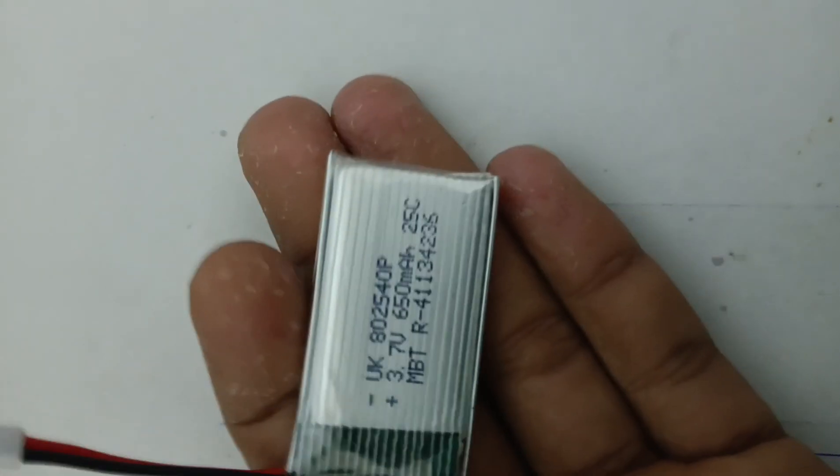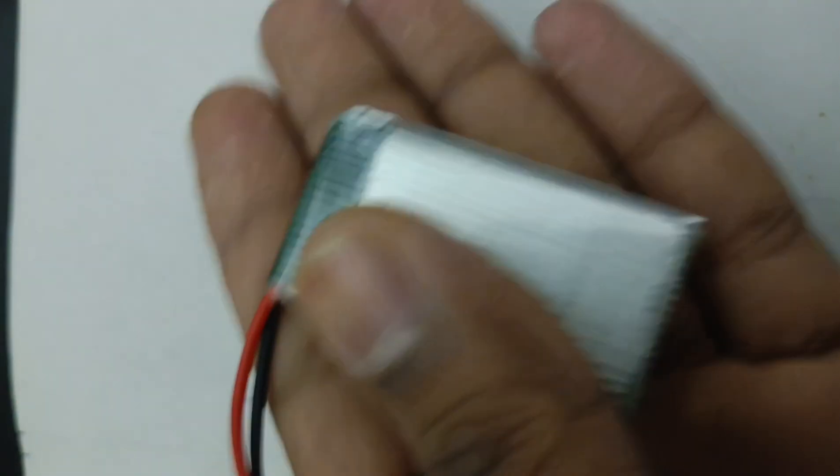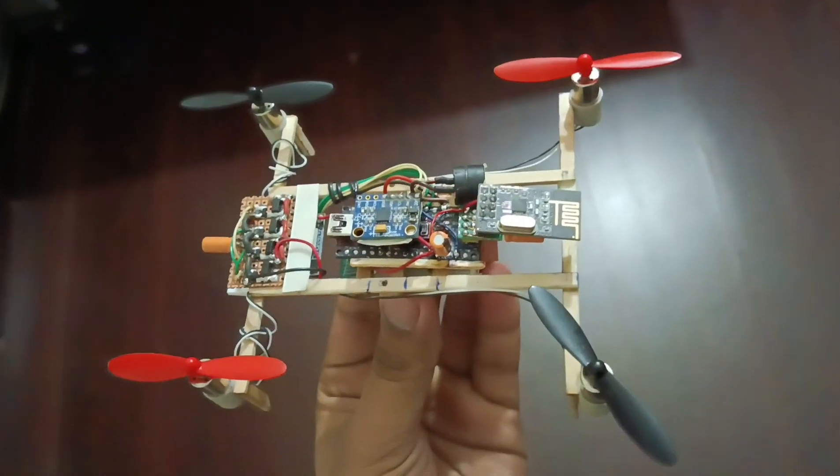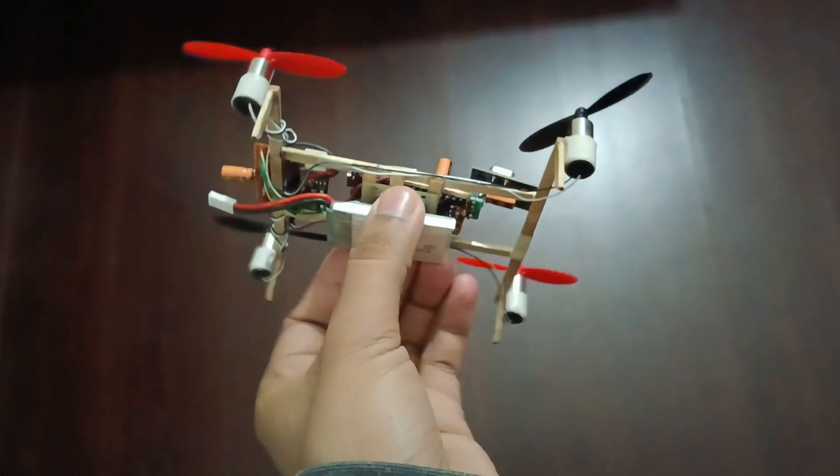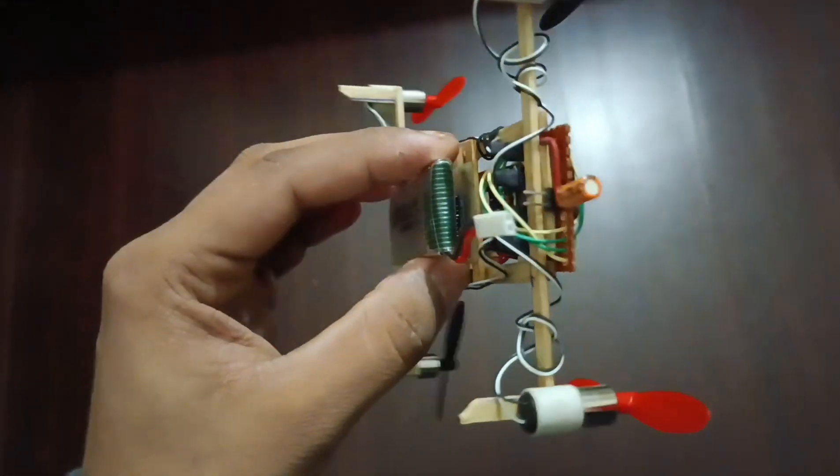To power it up, I'm using a 650mAh 3.7-volt lipo battery. At the bottom of the drone, I have attached the battery.